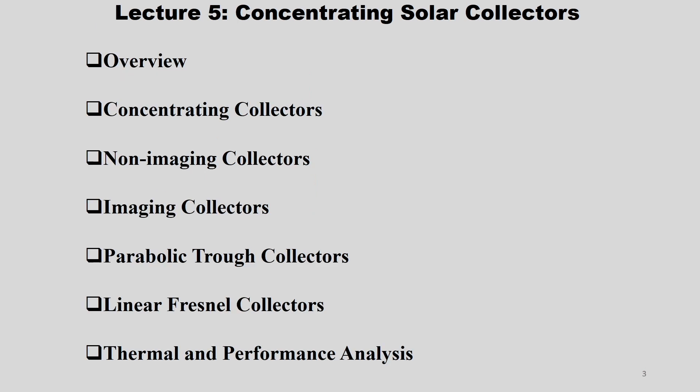In Lecture 5 we learnt about concentrating solar collectors — non-imaging collectors and imaging collectors. We also saw various kinds of concentrating solar collectors, concentration ratio, and how it helps in getting higher temperatures for solar power plant applications. We covered parabolic trough collectors, linear Fresnel collectors, and thermal and performance analysis of cylindrical parabolic concentrating collectors.